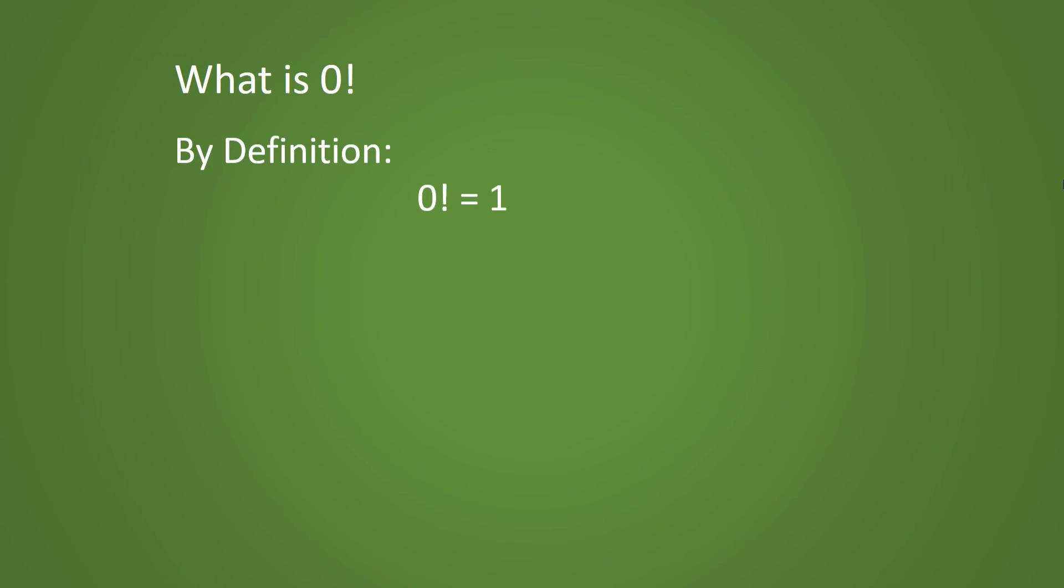So when you come across 0 factorial, just substitute 1 for the number. I hope you enjoyed this tutorial, and I hope you learned something.